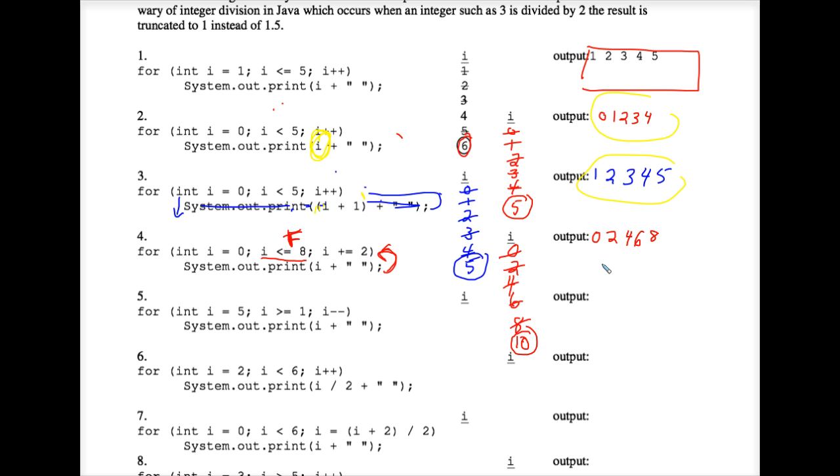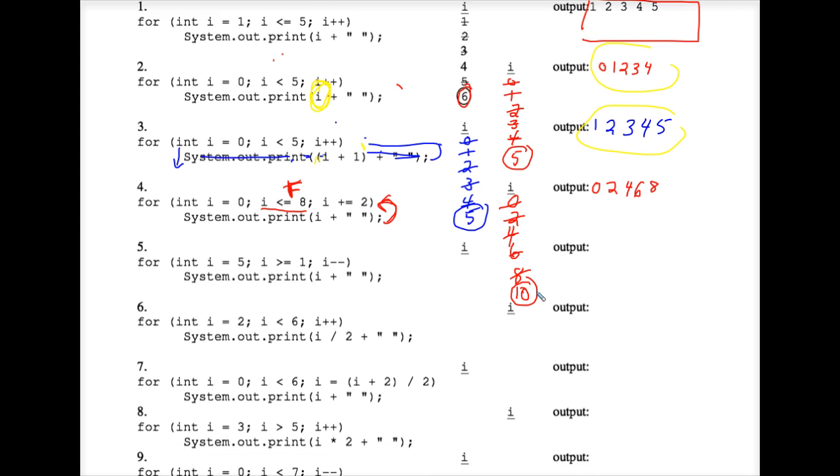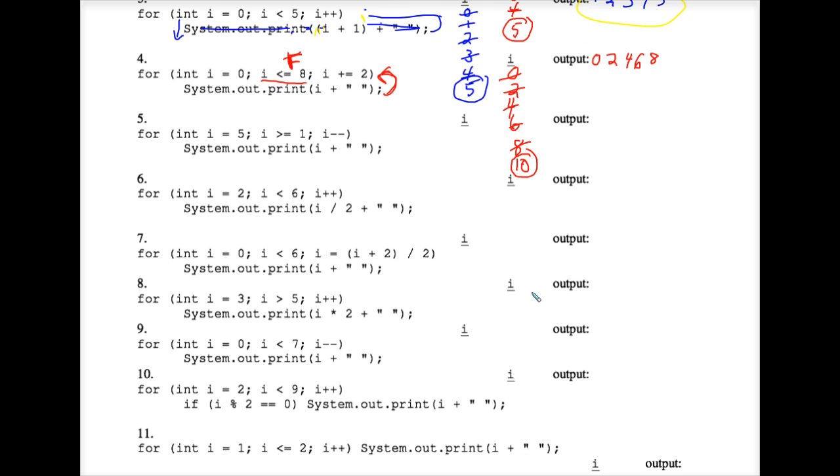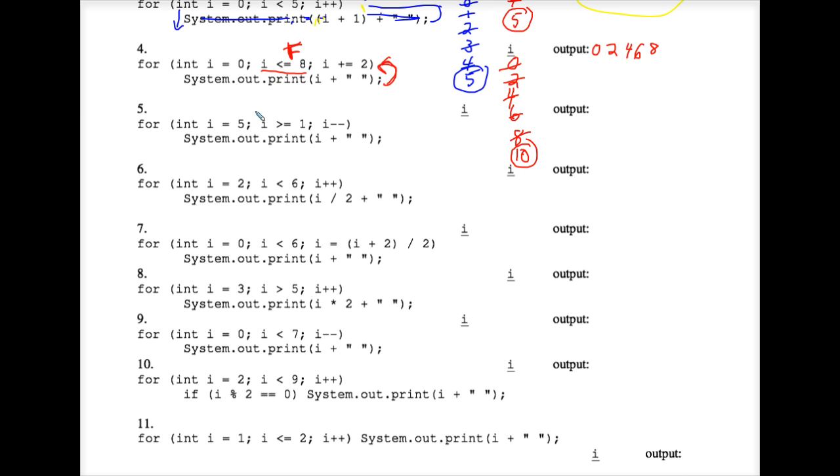I'm just going to skim through the rest of this worksheet that eventually you'll do for homework. And let's look for any other trickinesses that we might see. Oh, look, in number five, instead of i plus plus, I have an i minus minus. So we are stepping down from a high number to a low number. And notice that the greater than here is a greater than and not a less than like it was on previous exercises. Okay, it works. Number six, I'm dividing i by two.